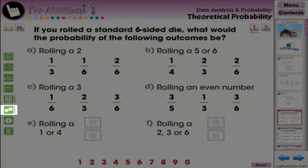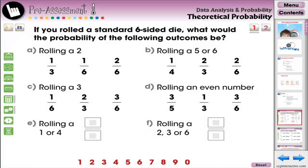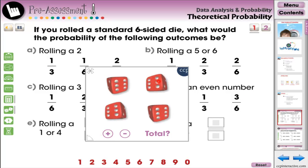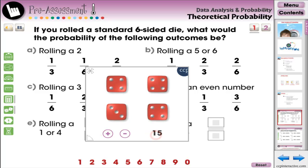The dice tool is used a lot in our data analysis and probability strand. Roll between 1 and 4 dice. Want the total? Touch the total button to calculate the total of the dice rolled.